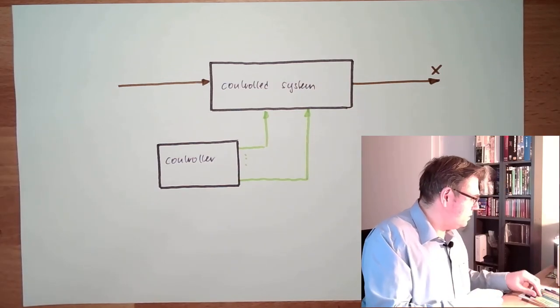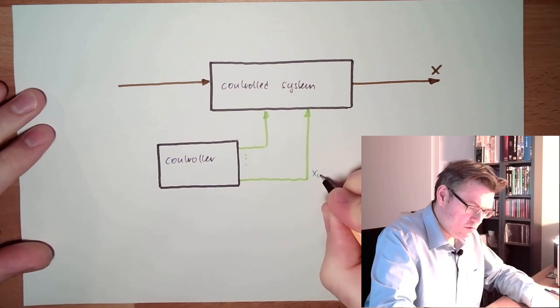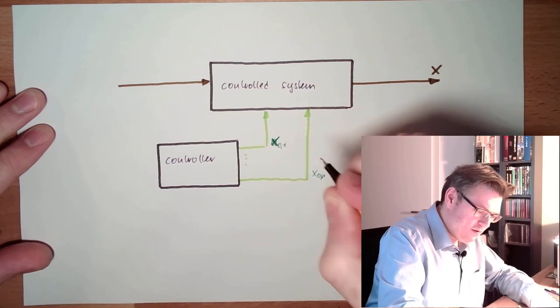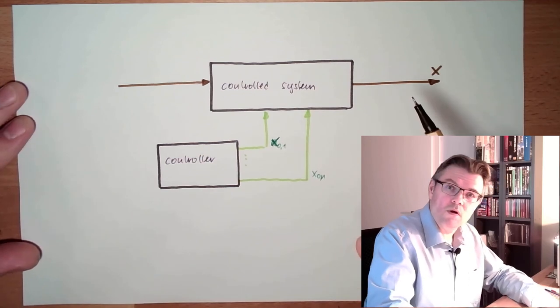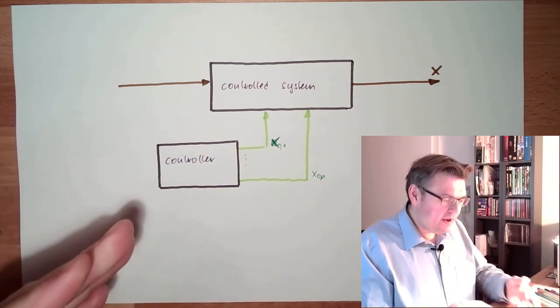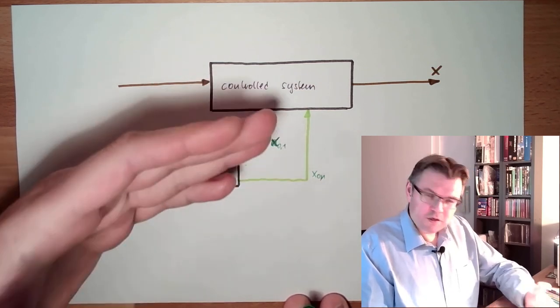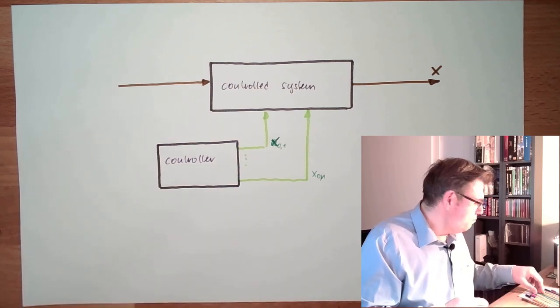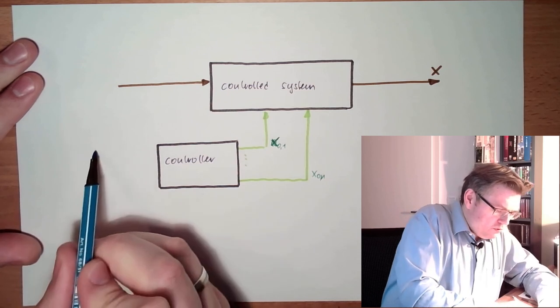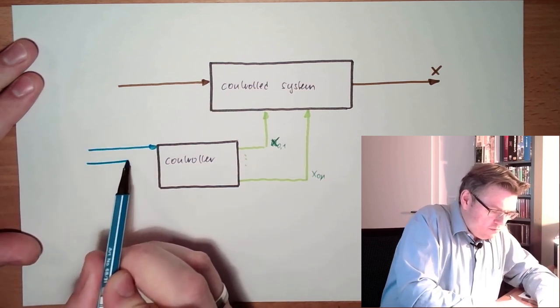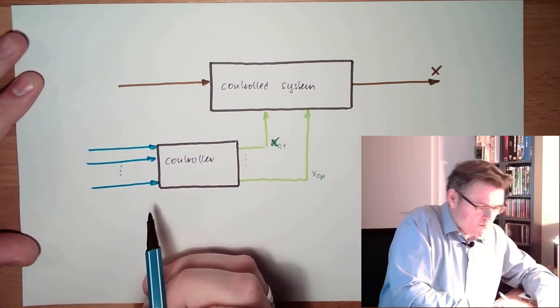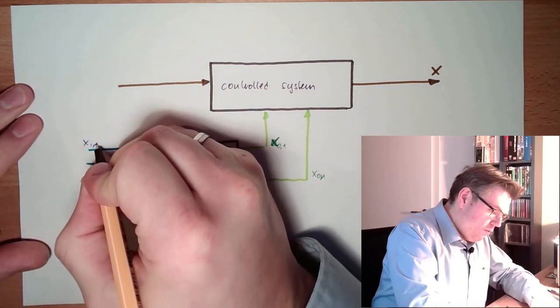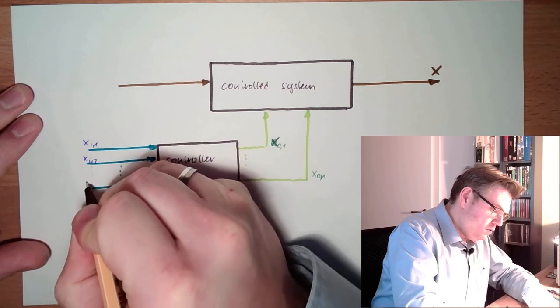So, this is, are the outputs, xo's, xon, x, xo1, from my controller. And, to decide in which order those outputs shall be switched or increased or decreased or whatever, the controller also have some inputs there. So, here we have inputs to the controller. xi1, xi2, xim.